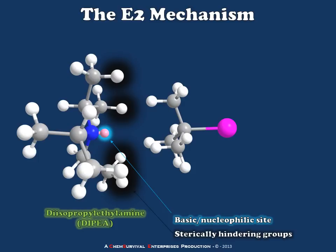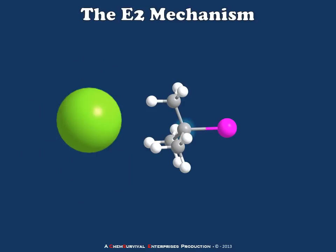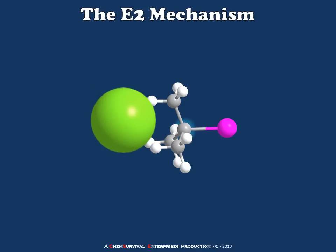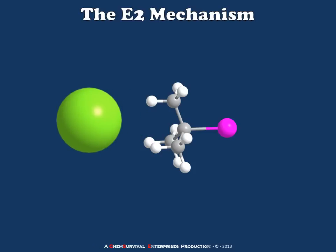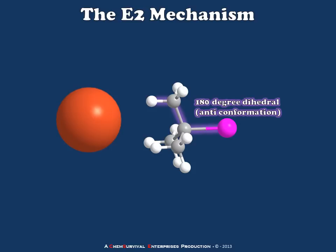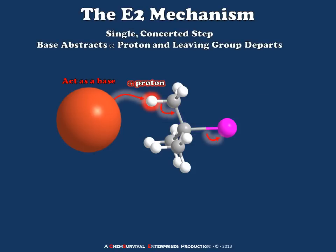All these sterically hindering groups mean that diisopropyl ethylamine can't really react well as a nucleophile. So instead of having a situation where my nucleophile attacks the substrate, my nucleophile will act as a base, abstracting an alpha proton which is out near the perimeter of the molecule and therefore much more accessible to this bulky base. We're going to find the alpha proton which is at a 180-degree dihedral from our leaving group, because removal of the alpha proton initiates departure of the leaving group in a cascade of electron flow — simultaneously creating a double bond and ejecting the leaving group in a single concerted step.